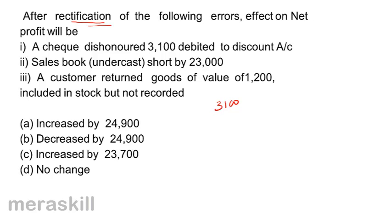Sales book was undercast — short. Now if I rectify, then sales will come up by 23,000, therefore my profit will increase. A customer returned goods of the value of 1,200. It has been included in stock but has not been recorded. So if I record the return, that would be a loss.